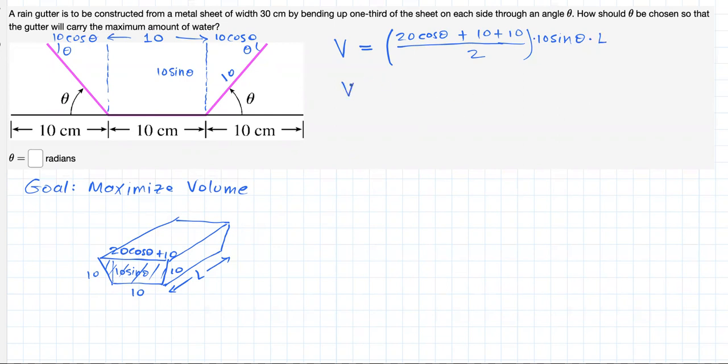Now this simplified will lead to the following: 100L multiplied by cosine of theta plus 1, times sine of theta. And here, important, notice this is just a constant.